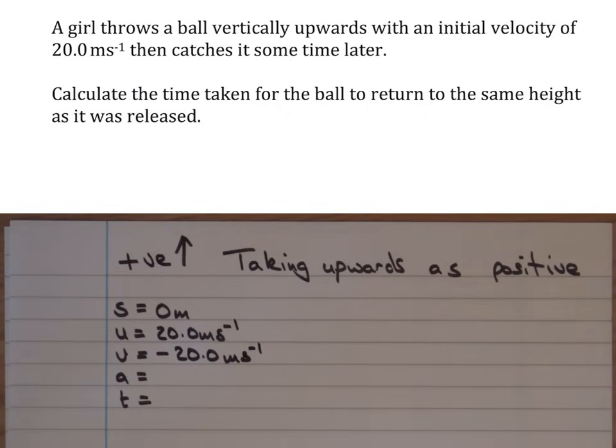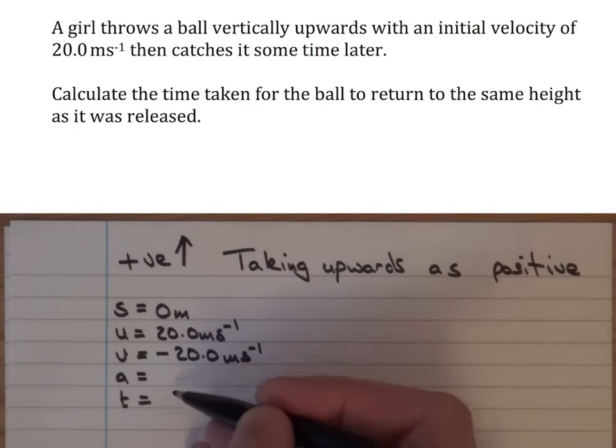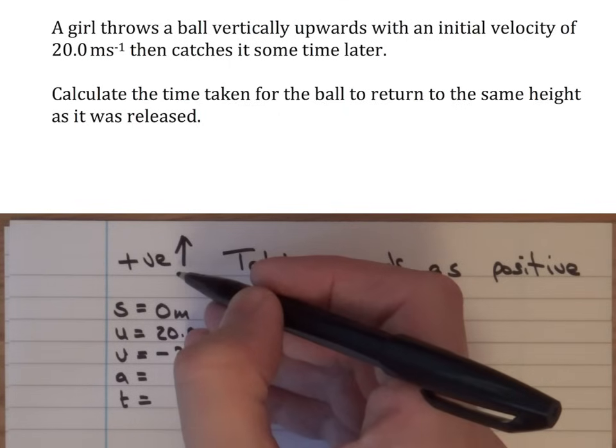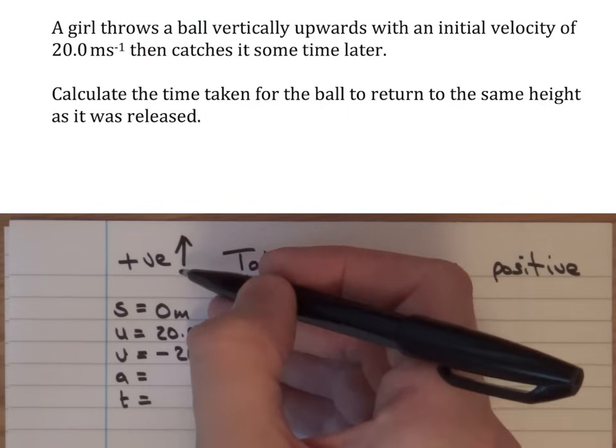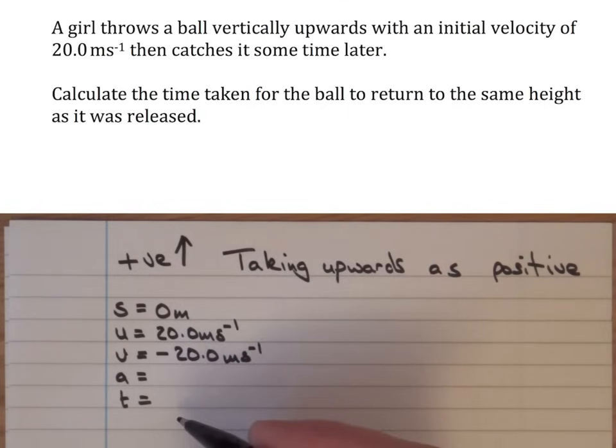Acceleration due to gravity, that's 9.8 as we'll find in the data sheets at the start of the paper. But of course, when the ball's moving upwards in the positive direction, it's decelerating. That would give a negative acceleration. Then when it starts to move downwards,